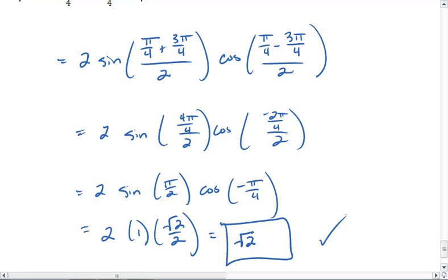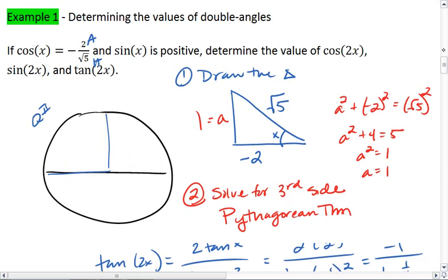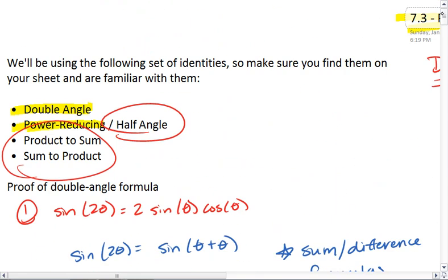Hopefully these problems helped you a little bit, we'll be going over a couple more problems in class, but just make sure that you understand them. This concludes section 7.3, so now you should know your double angle, your power reducing half angle formulas, your product to sum, and your sum to product formulas.